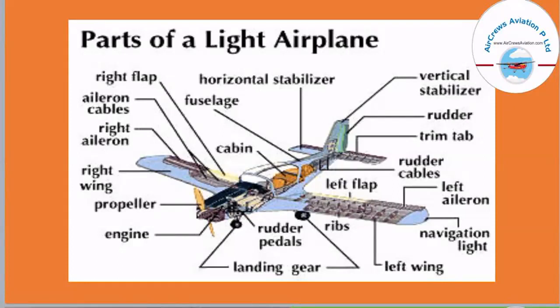Then we have the left section of the aircraft wing, which has the left flap and left aileron. If you see the navigation light, it is at the wing tip of an aircraft. You can basically see some lights at the outer portion of the aircraft — any light at the wing tip is basically the navigation light.